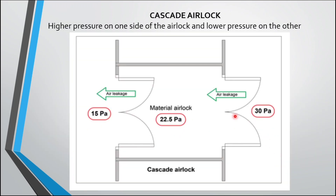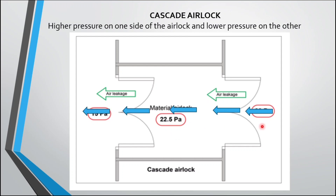Cascade airlock means higher pressure on one side of the airlock and lower pressure on the other side. Air will flow from one cubicle through the airlock to another cubicle — that is, air flows in a single direction.